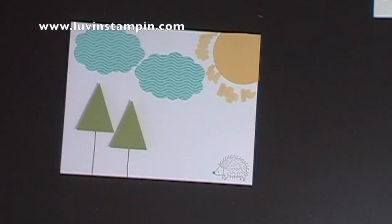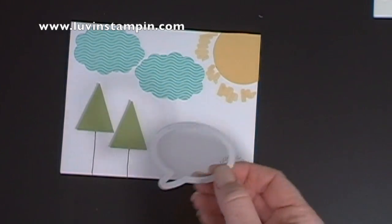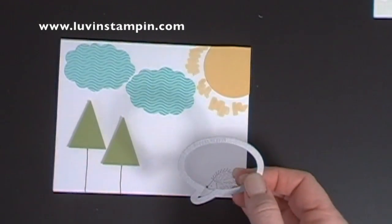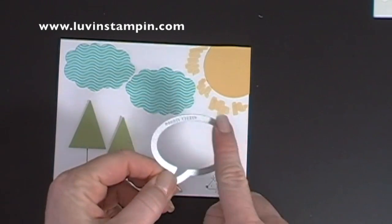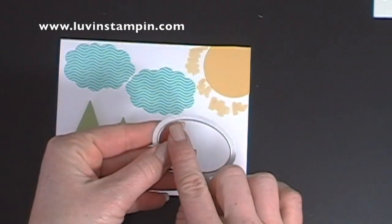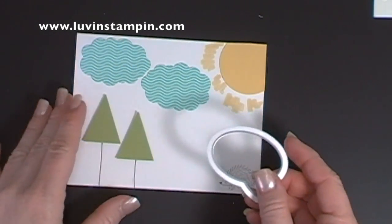Now this last little trick I have for you is really fun, and I found a way to use the framelits other than cutting. So this framelit, if you, this edge is flat, this edge is raised and has the razor on it that cuts through the paper.